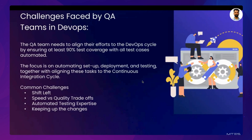Moving to the next slide: challenges faced by QA teams in DevOps. Several challenges may arise due to fundamental changes in workflow, collaboration, and technology use in quality engineering and DevOps environments. It's not just about ensuring the quality of the software, but also about enhancing the processes that lead to the development of a high quality software product continuously. Some of the main challenges a QA might face include: shift left, speed versus quality trade-off, automated testing expertise, and keeping up with changes.